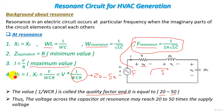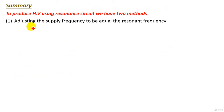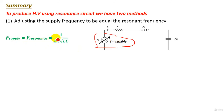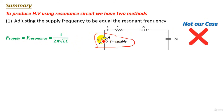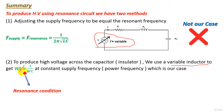In our high-voltage lab, the capacitor represents the insulator. To produce high voltage using a resonance circuit, we have two methods. The first is adjusting the supply frequency to equal the resonance frequency 1/2π√(LC). However, since we want to generate high-voltage AC at power frequency with a constant supply frequency of 50 or 60 Hz, we go to the second method: using a variable inductor and adjusting L to make ωL equal 1/ωC at constant power frequency.